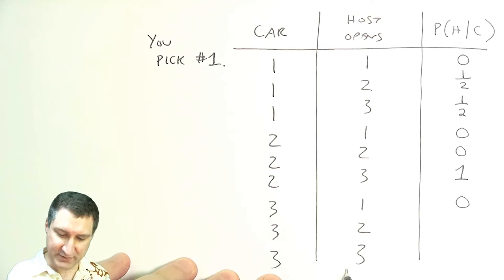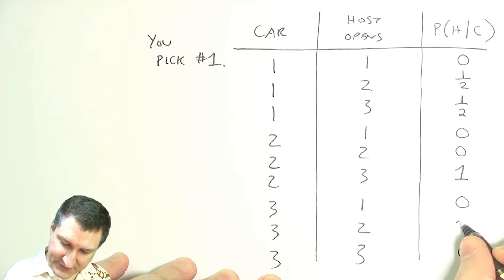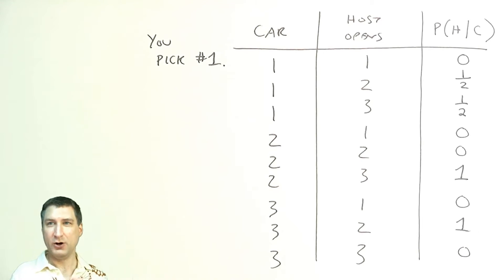Now, conversely, if the car is actually behind number three, he can't open number three. He has to open number two. So only when the car is actually behind your door does the host have a little bit of a choice about what other door to open. Otherwise, there's only one remaining door that has a goat behind it that the host is able to open.